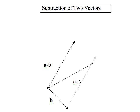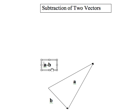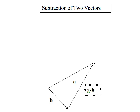and then, interestingly enough, the vector formed by going from the head of B to the head of A is A minus B.